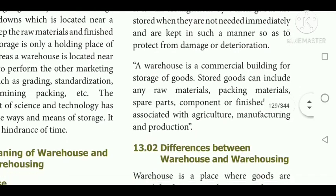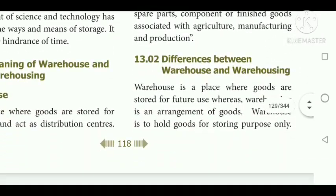If goods are stored for future consumption, it is called a warehouse. The main difference: a warehouse is a place where goods are stored for future use, whereas warehousing is an arrangement of goods — you are arranging goods according to their types and the conditions needed. That is called warehousing, whereas a warehouse is a place.